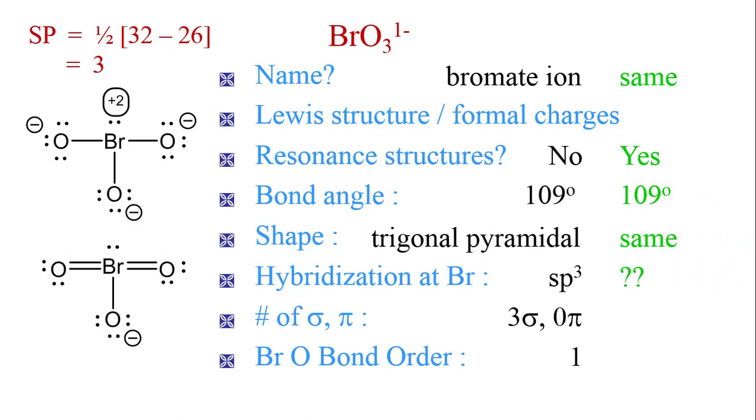We won't answer the hybridization question, since we would have to invoke d orbitals to do so. With the bottom structure having two double bonds, there would be three sigma bonds and two pi bonds. That also works out to a bond order of 1.67, which is the average of 2, 2, and 1.